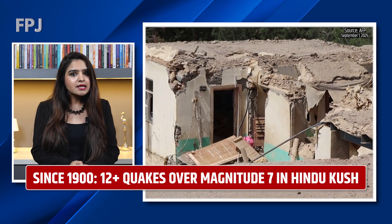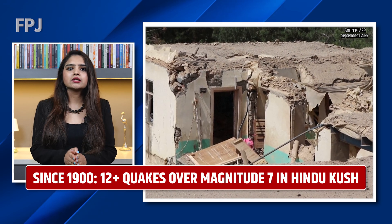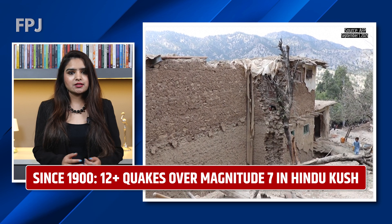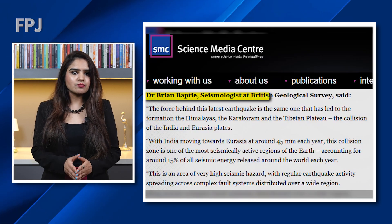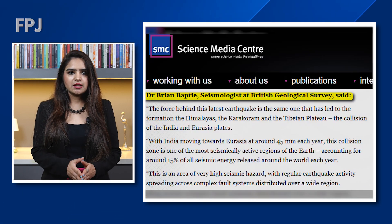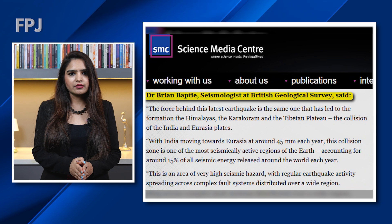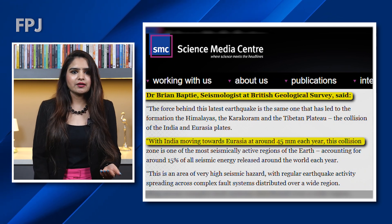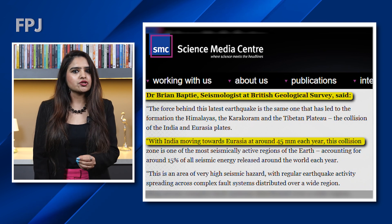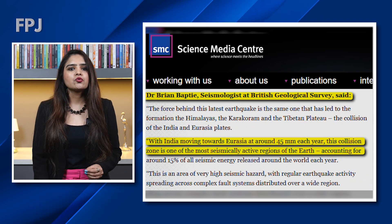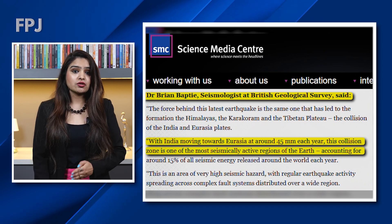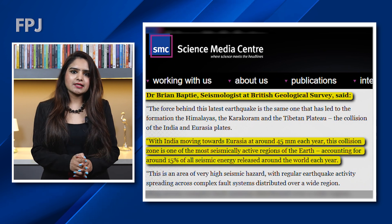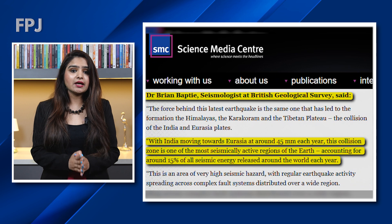According to experts, there have been 12 earthquakes stronger than magnitude 7 in the Hindu Kush region since 1900. According to seismologist Brian Baptiste from the British Geological Survey, with India moving towards Eurasia at around 45 mm each year, this collision zone is one of the most seismically active regions on earth, accounting for around 15% of the seismic energy released globally every year.